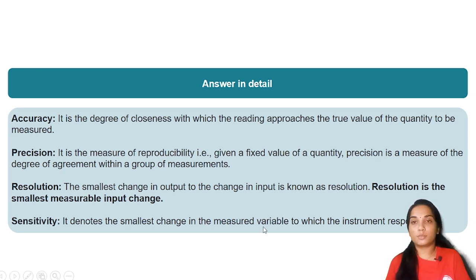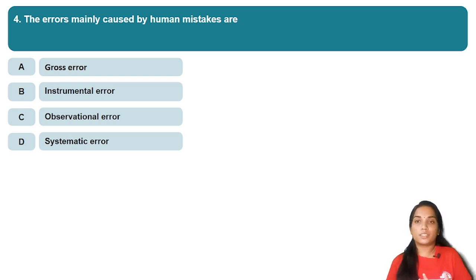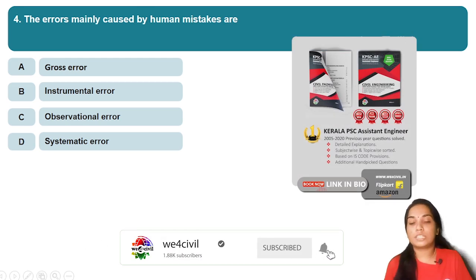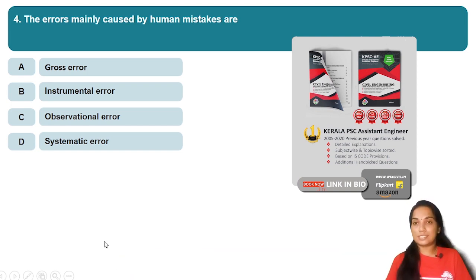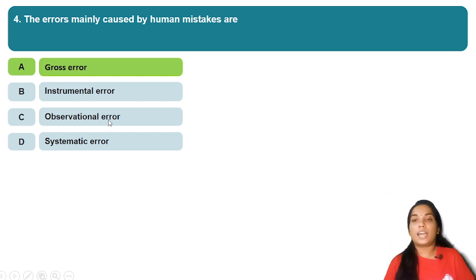Errors are mainly caused by human mistakes, observations, and experimenters. The error types are: A) Gross error, B) Instrumental error, C) Observational error, D) Systematic error. The answer for errors caused by human mistakes in reading, recording, and calculating is gross error.